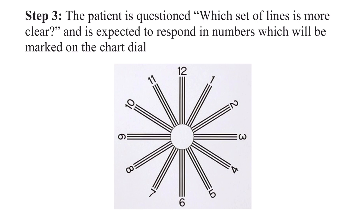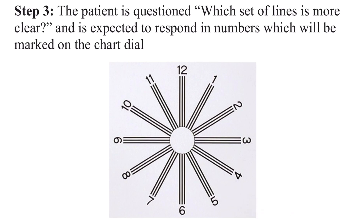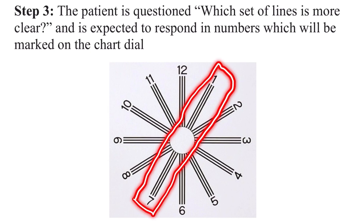In step three, the patient is questioned about which set of lines is more clear and is expected to respond with the numbers marked on the chart dial. You will ask the patient which set of lines is more clear compared to the other. For example, if the patient says the 1 and 7 line is clear compared to the other lines on the chart.